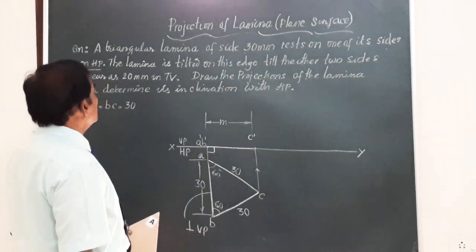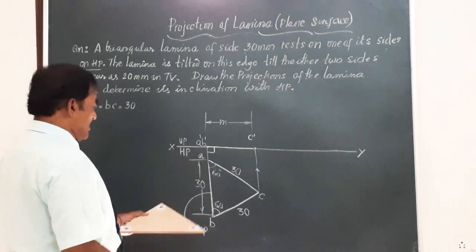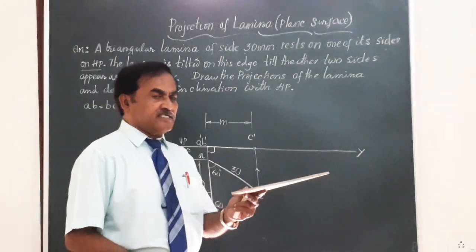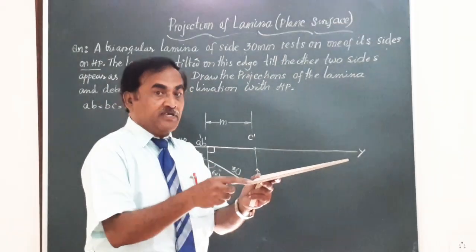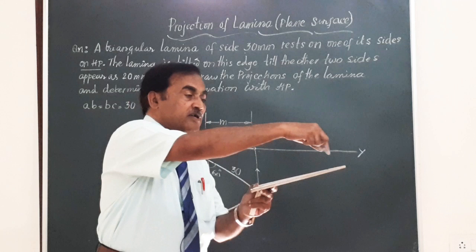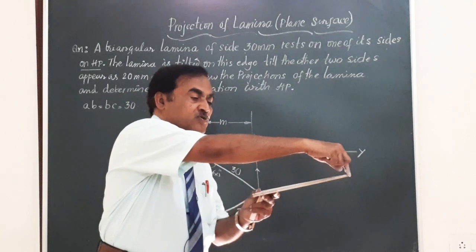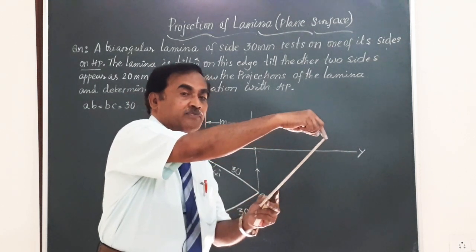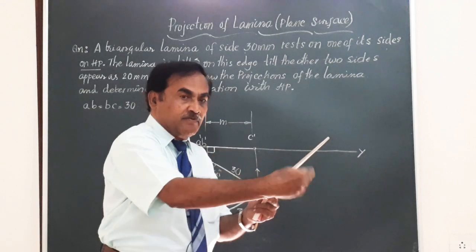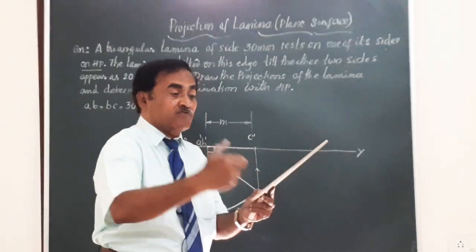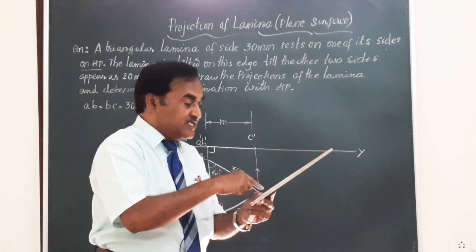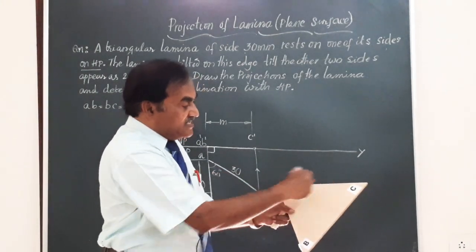He says in the question that the lamina is tilted. We had it resting on HP. The lamina is tilted on the edge AB. Tilted means what? I am going to hold this corner, slowly lift it up, such that for some particular value, one value of that angle, only one value of that theta, these two sides, namely BC and AC, appear as 20 mm each.